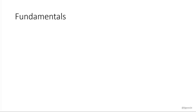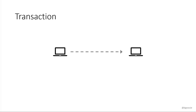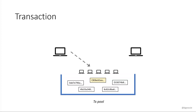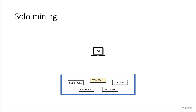Before we go into exactly how pool mining works, let's remind ourselves of the fundamentals. A transaction — Alice wants to send Bob some money. As we all know, it doesn't directly go from Alice's computer to Bob. What actually happens is it gets broadcast to the network, bounced around nodes, and they add it to the transaction pool.